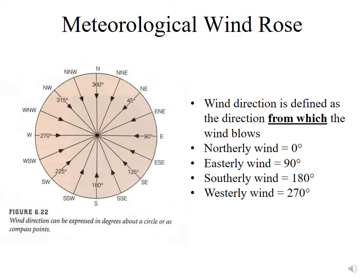From a meteorological perspective, we're much more interested in where the wind is coming from than where it is going to. As a result, our naming convention is based upon the direction from which the wind is blowing. So we use a compass rose, but it's not the normal compass rose used in math. Instead, it has zero degrees at the top from the north direction and moves in a clockwise direction, so that a northerly wind — a wind coming from the north — is designated as zero degrees or 360 degrees.